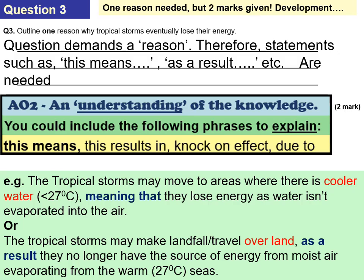The next question: outline one reason why tropical storms eventually lose their energy. The question says 'a reason', so it demands a statement using 'which means that' or 'as a result' — there must be a reason. Two examples: first, when the tropical storm moves over cooler water less than 27 degrees Celsius, they lose energy as the water isn't evaporated into the air. Second, if the storm makes landfall or travels overland, it no longer has the source of energy from the moist warm air evaporating from the warm seas.